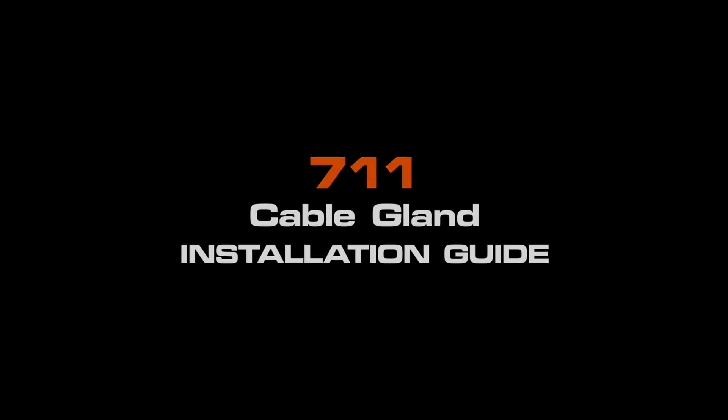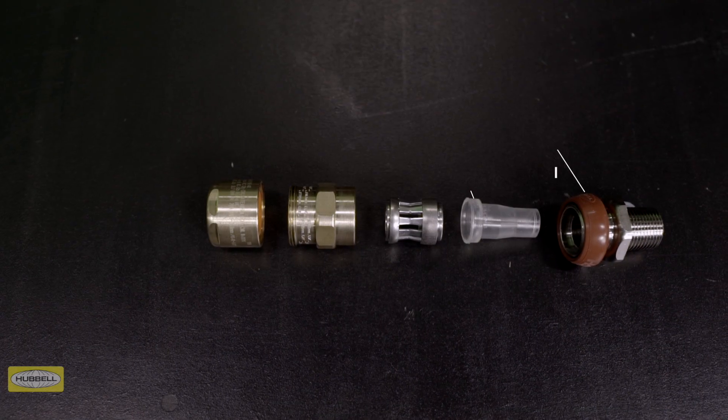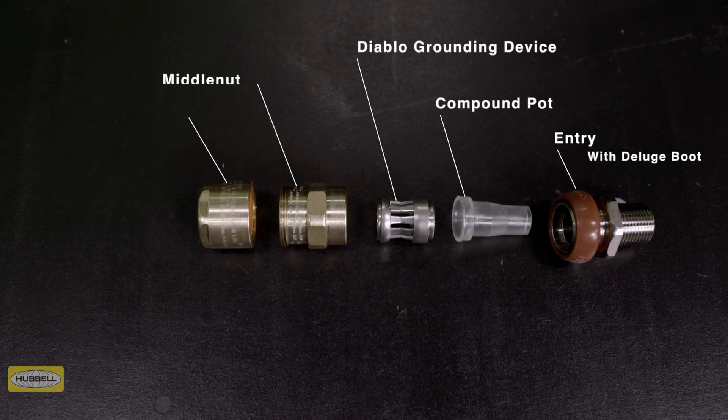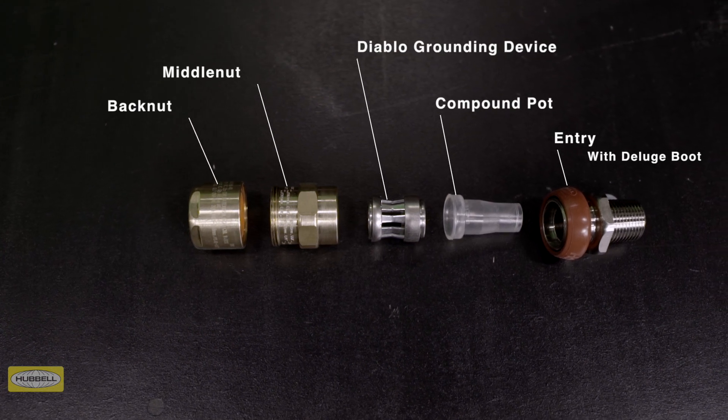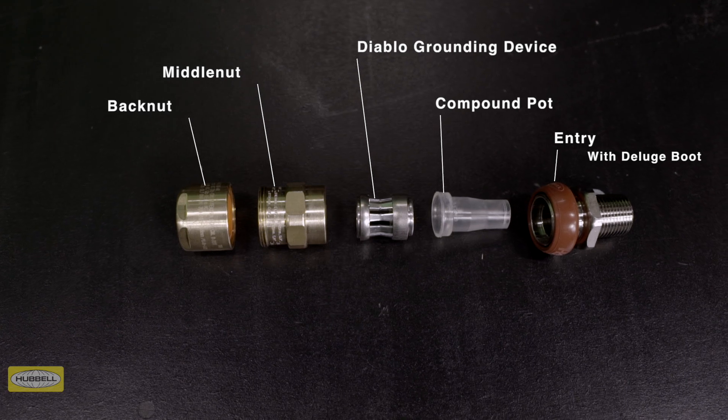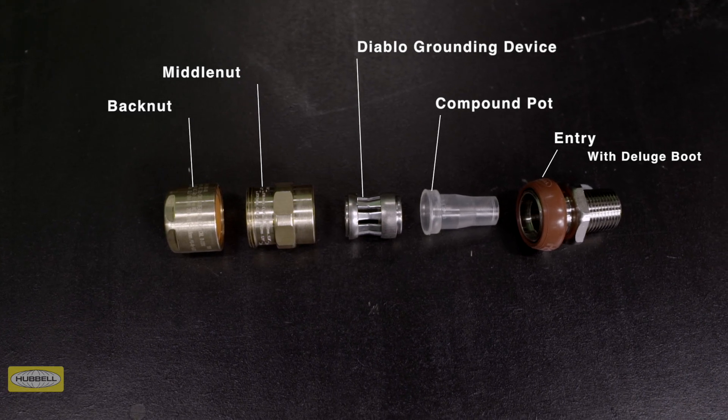The 7-Eleven cable gland consists of five key components: entry with deluge boot, compound pot, Diablo grounding device, middle nut with patented tightening guide, and back nut.